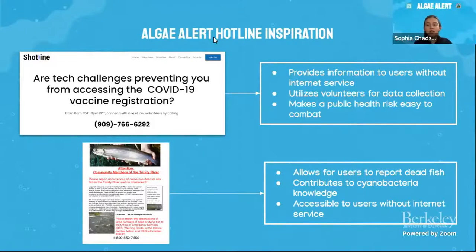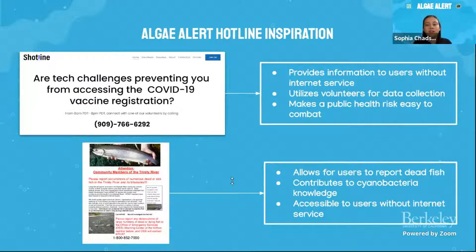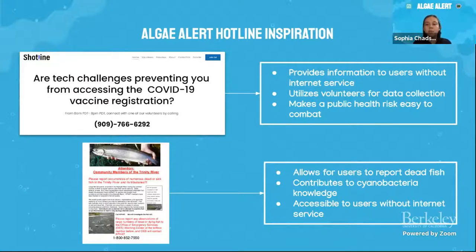Our second prototype is the AlgaeAlert hotline. Our team was inspired by a project called ShotLine, which let users call to sign up for the COVID vaccine — it provides information without internet and utilizes volunteers for data collection. We also drew inspiration from the already-existing dead fish hotline, which is accessible without internet and contributes knowledge on cyanobacteria blooms. We wanted our hotline to be accessible to those without internet service, but also more user-friendly and easier to gather data with, leading us to our current text hotline format.